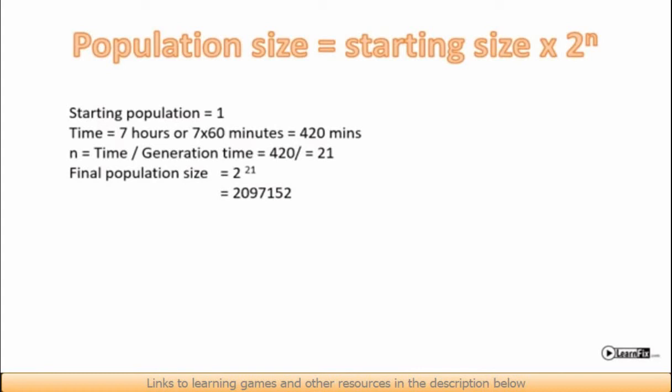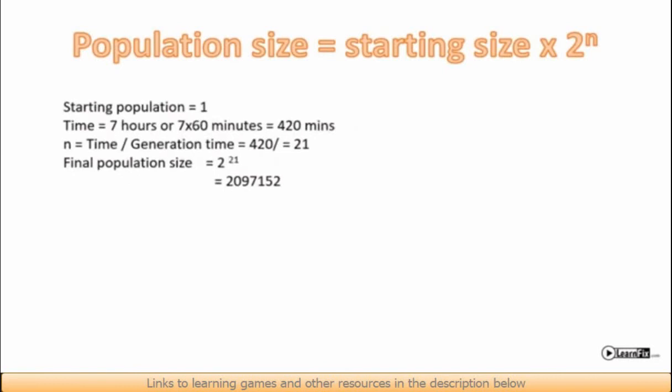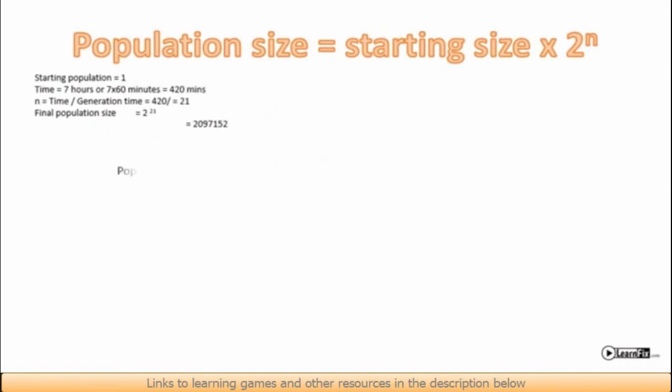We can use an easier example to see how this works. If we start with a single bacterium, which takes 30 minutes to divide, how many will there be in an hour and a half? Well, an hour and a half is 90 minutes, which is 90 divided by 30 is 3, that's n. So we'll have 2 to the power of 3, which is 8 bacteria.